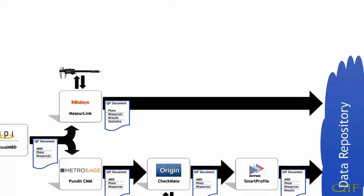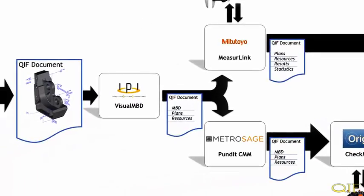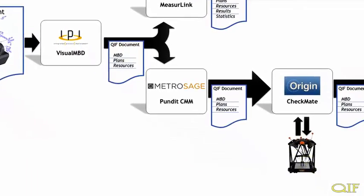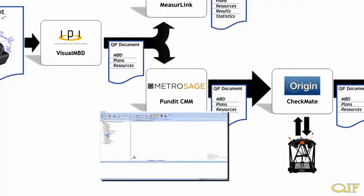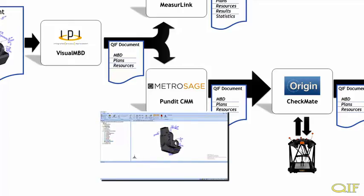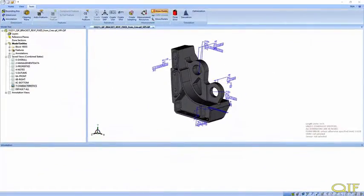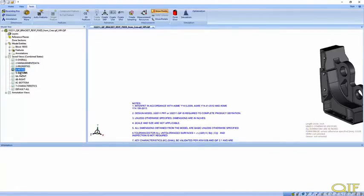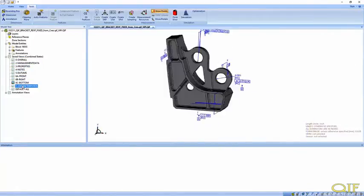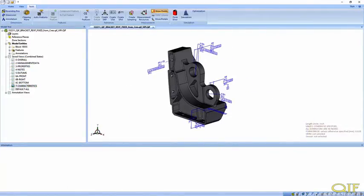We will now take a step back and go over the CMM measurement workflow, which involves the creation of a high-level CMM measurement plan using Metrisage's Pundit CMM software, then the creation and execution of a DEMIS program on a CMM by Origin International's Checkmate software, and finally analysis of GD&T using CODEM's Smart Profile software.